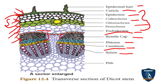The pith is present in the center of the stem and is also named medulla — medulla means middle region. It is made up of parenchyma cells with intercellular spaces, and its function is storage.